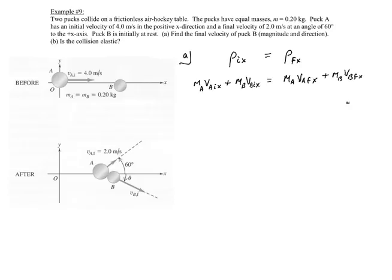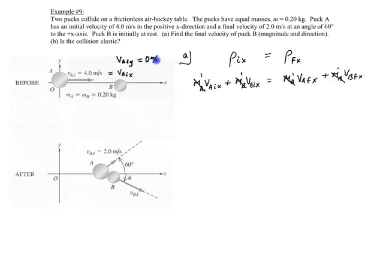Since mass A and mass B are the same, we can cancel all the masses, which simplifies our problem. With our coordinate system, A is moving completely horizontal, so the velocity of A initially in the X direction is just 4 m/s, and in the Y direction it's 0. Velocity B initial is 0, so we have: 4 + 0 equals velocity A final in X, plus velocity B final in X.